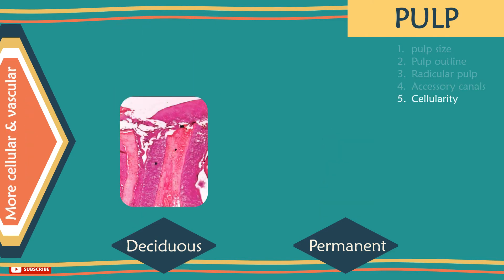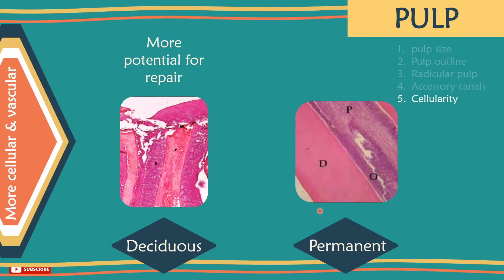Cellularity and vascularity of the pulp: deciduous pulp is richer in cells and vasculature, which renders it having more potential for repair, unlike in permanent teeth, where it gets more fibrous with age and has decreased ability for repair.